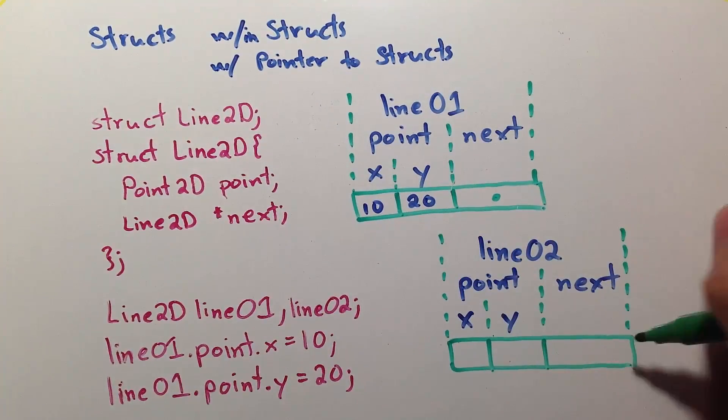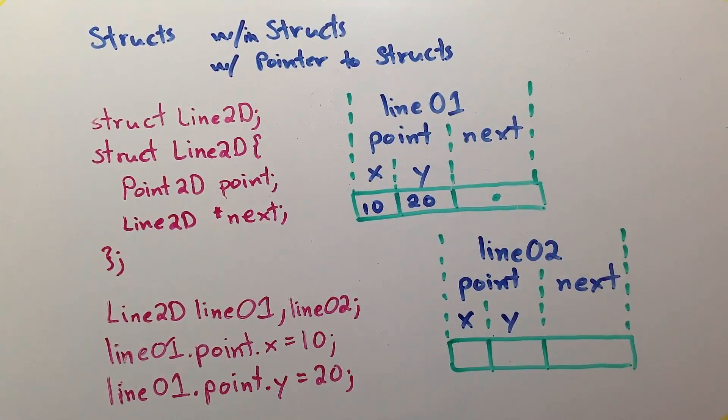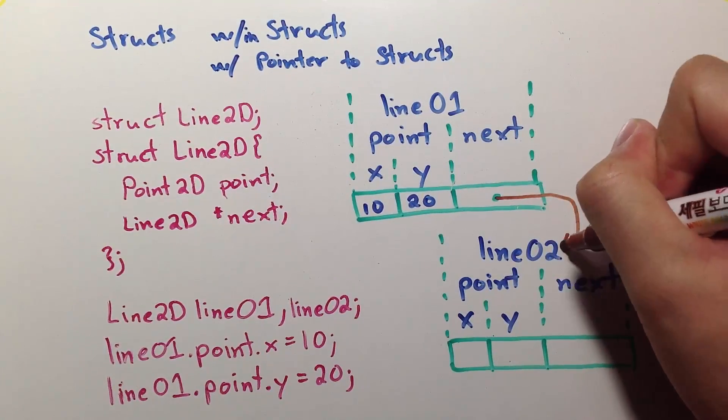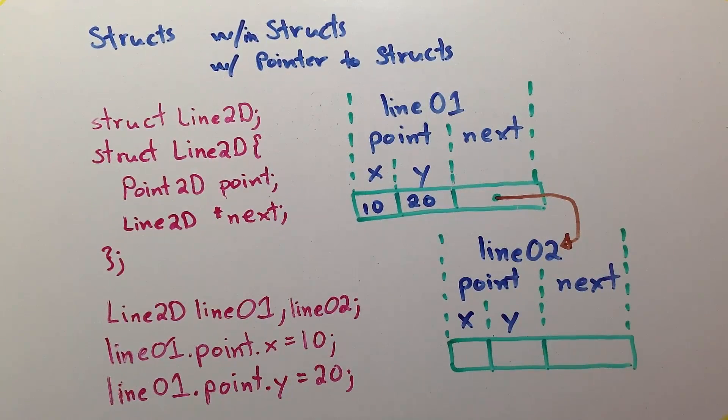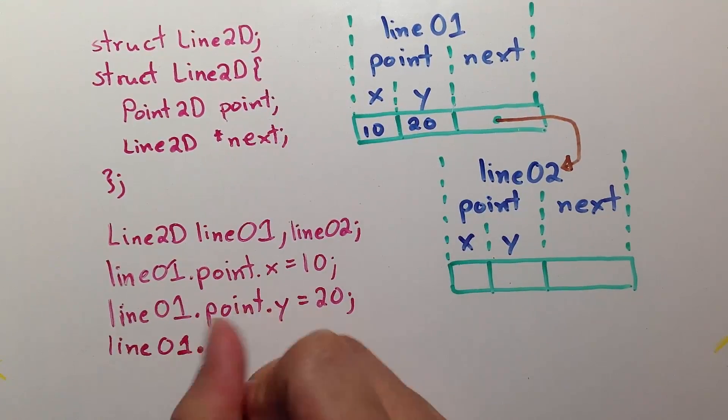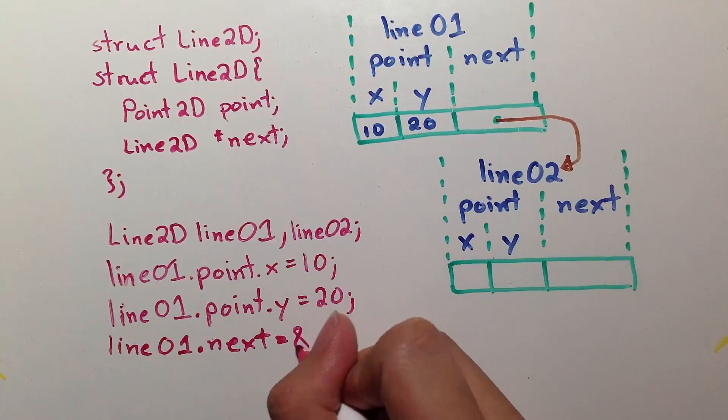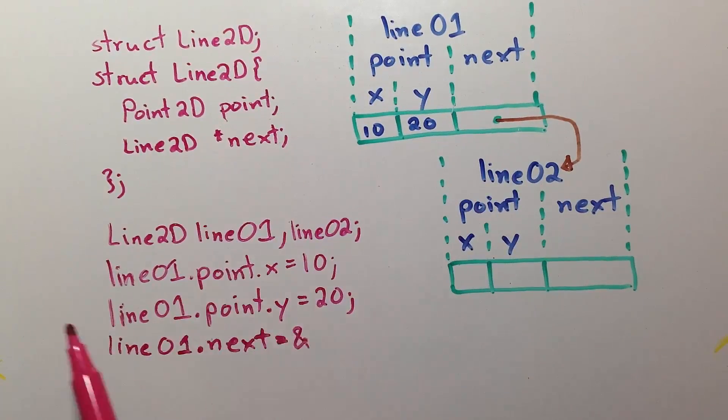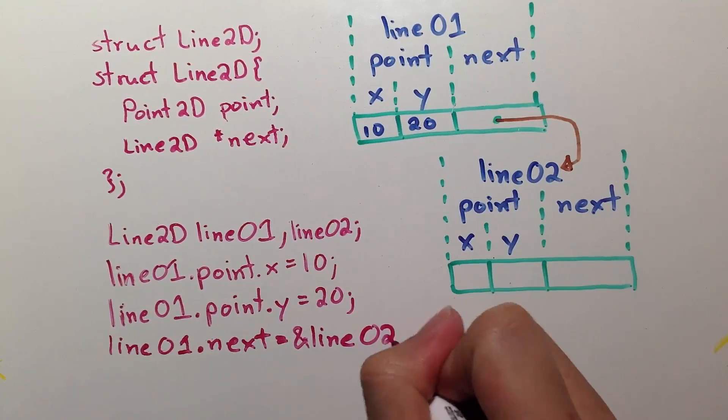Now, what I want to happen is to connect line01 and line02 by making the next of line01 point to line02. In code, we assign to line01.next the address of line02. Remember that the next is a pointer which requires an address of a variable that it can point to. So, in this case, it's line02.